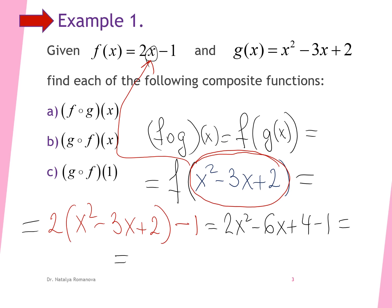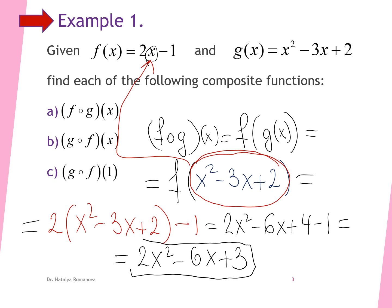Combining 4 minus 1 gives us 2x squared minus 6x plus 3. So the composition of functions, where f of x equals 2x minus 1 and g of x equals x squared minus 3x plus 2, equals 2x squared minus 6x plus 3.